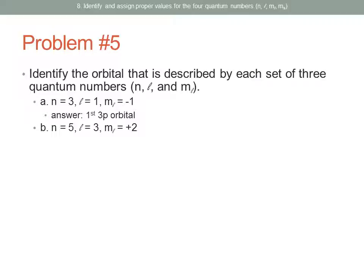Next: N=5, L=3, M_sub_L=positive 2. N=5 is the fifth energy level, L=3 means an F sublevel — so this is 5F. Since L=3, the smallest M_sub_L value is negative 3, which is the first orbital. Counting up: negative 3 is first, negative 2 is second, negative 1 is third, 0 is fourth, positive 1 is fifth, and positive 2 is the sixth. The answer is the sixth 5F orbital.